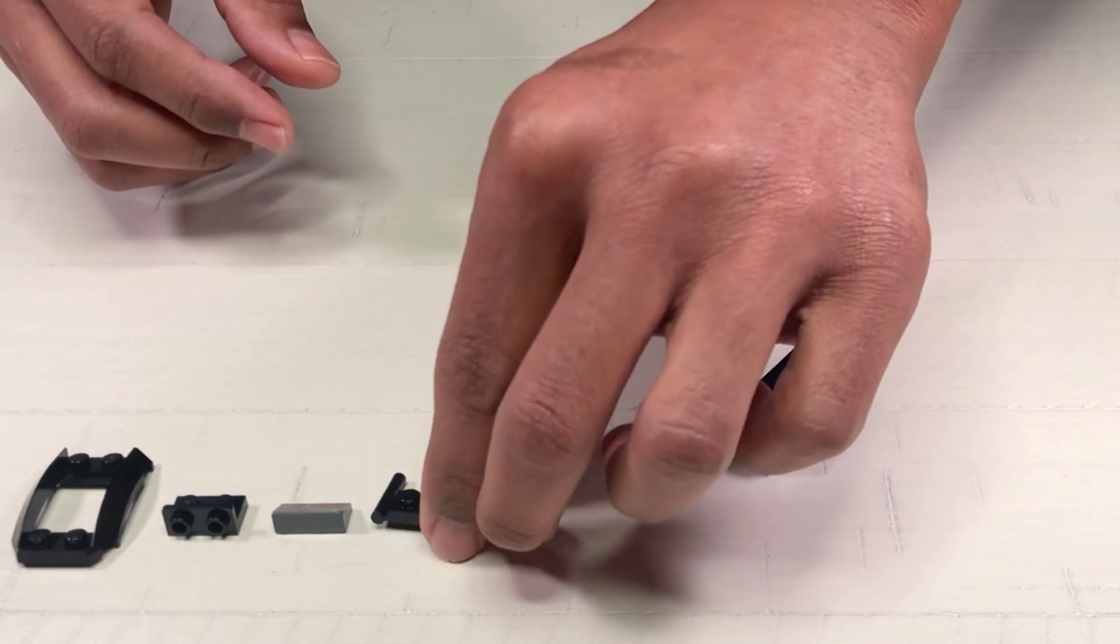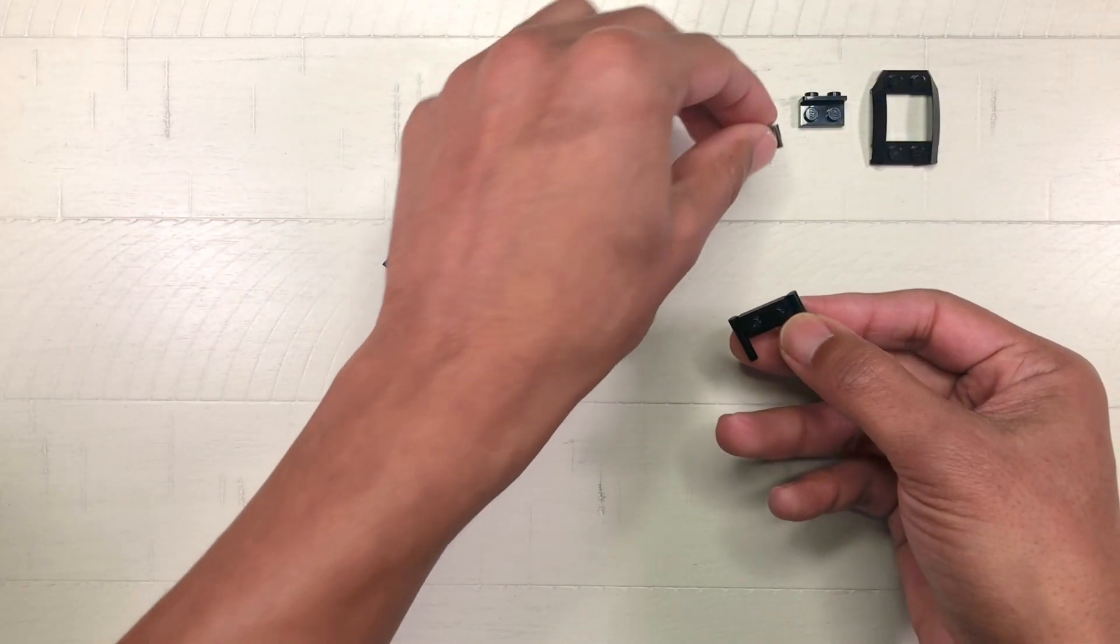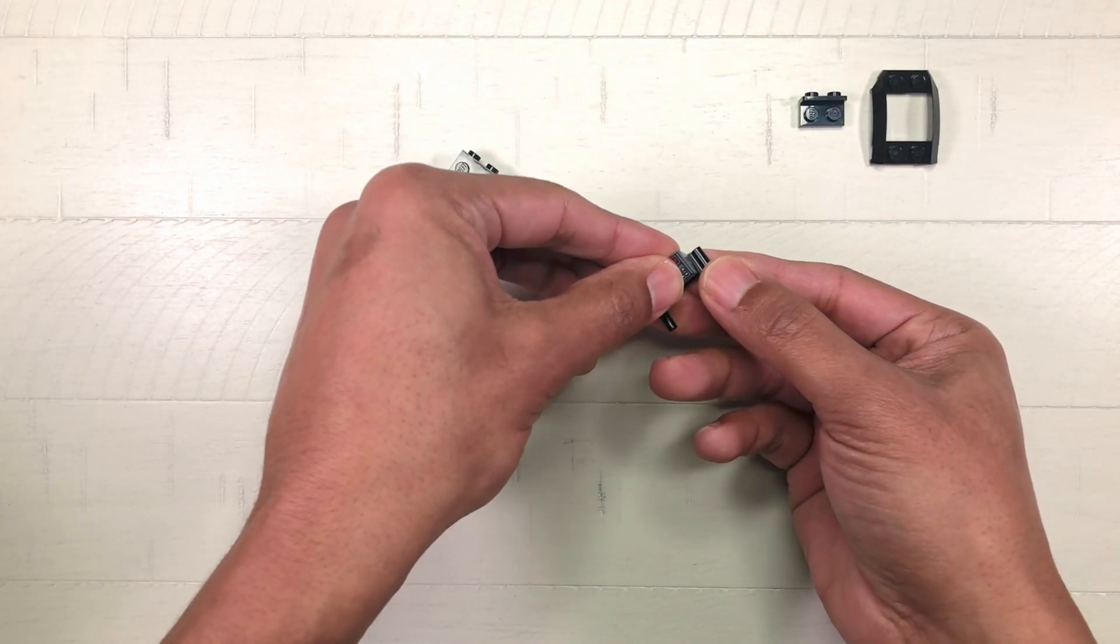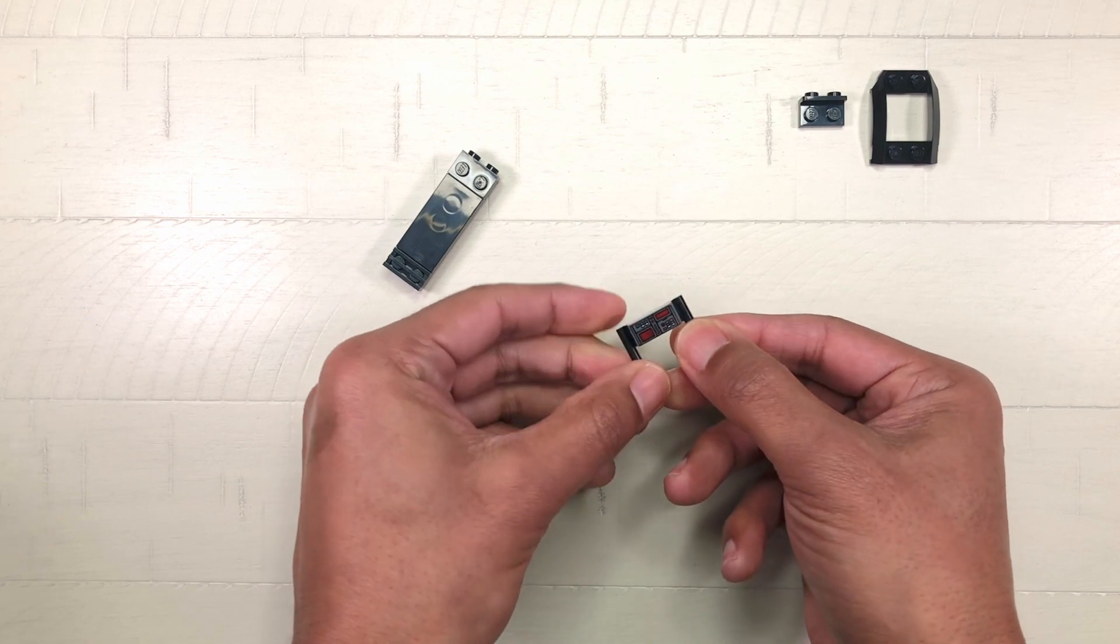Set that aside and grab the one by two plate with bar handles and attach the one by two thirty degree slope with screen pattern directly on top.